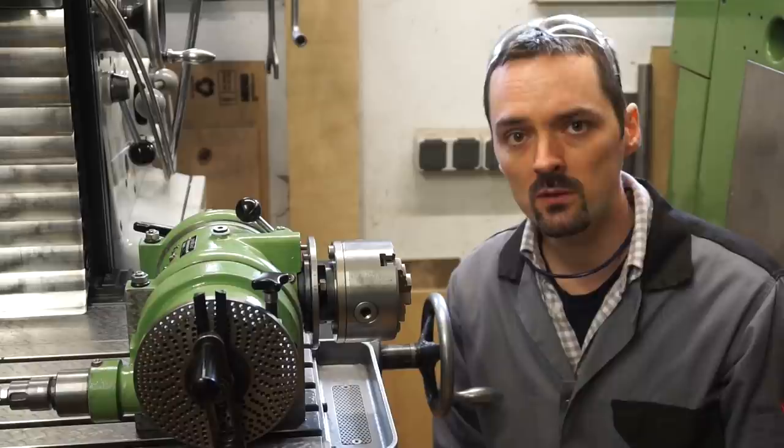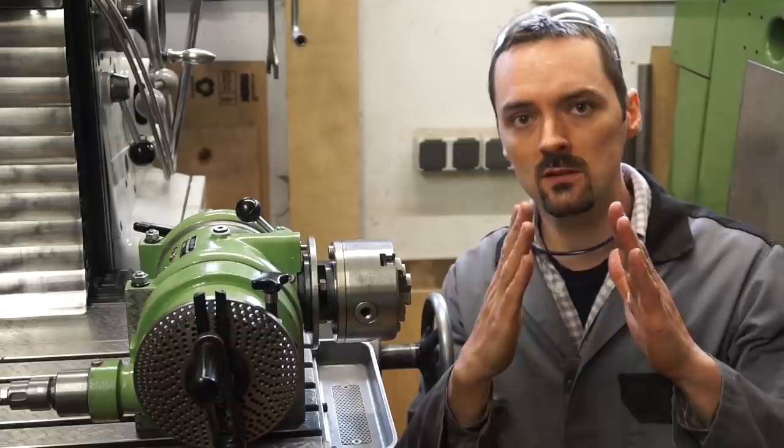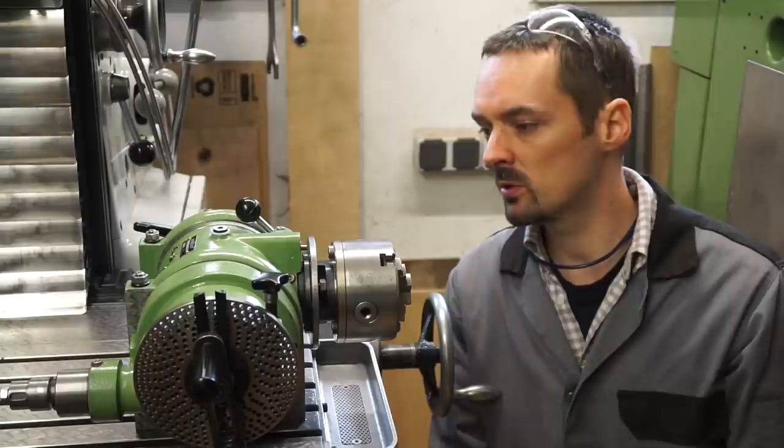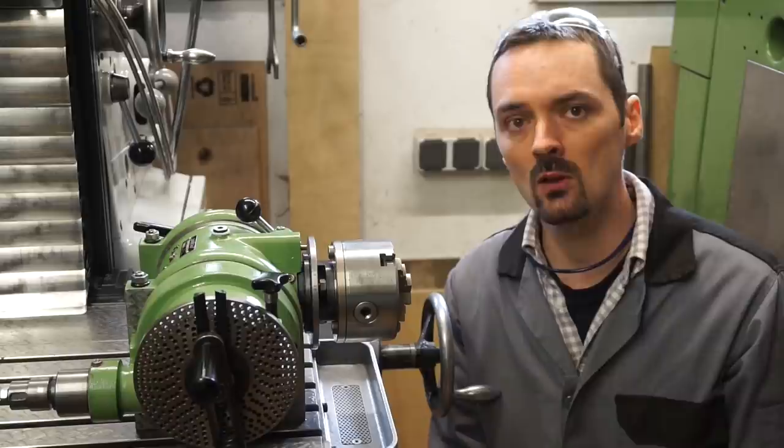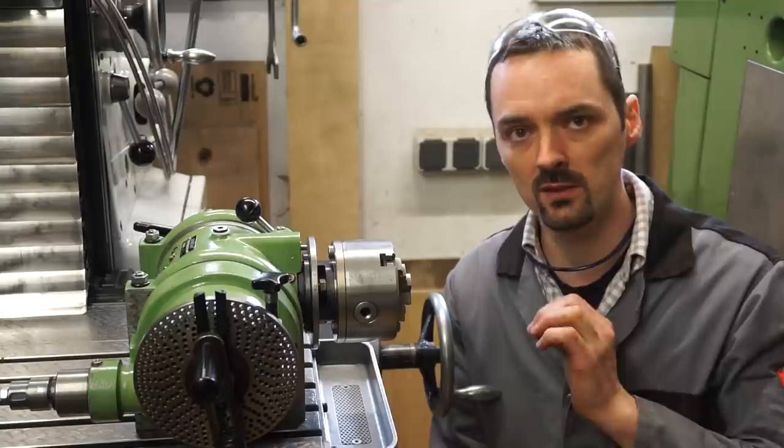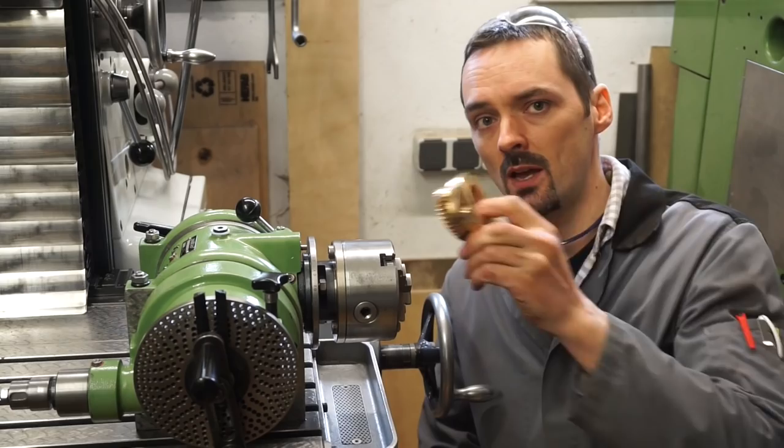In the last episode we managed to regrind the worm so as to get rid of the corrosion spots completely. Thereby the lands on the worm got slightly narrower, and in this episode we want to focus on machining a worm wheel replacement that hopefully not only is precise but hopefully also fits the worm perfectly.